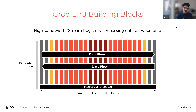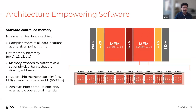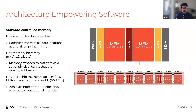Diving deeper into how the architecture empowers our compiler: beginning with memory, the Groq LPU architecture employs entirely software-controlled memory. That means there's absolutely no dynamic hardware caching. The compiler is aware of the physical location of all pieces of data within memory throughout the execution of the program. This means there's no memory hierarchy — no L1, L2, L3 — and in fact no notion of a cache miss. The physical banks of memory are exposed directly to software, which is able to physically address the banks directly and understand the exact location of all data within memory for every cycle of execution.